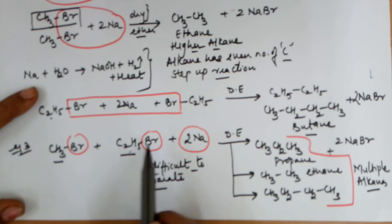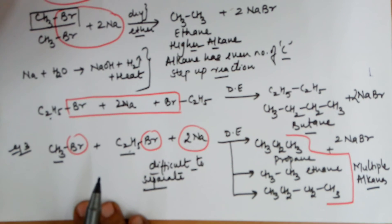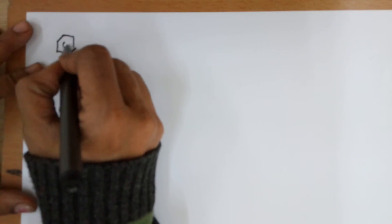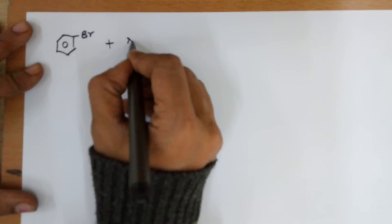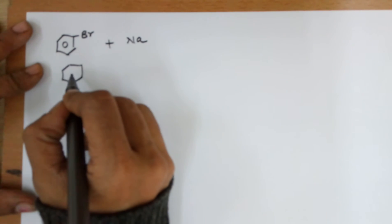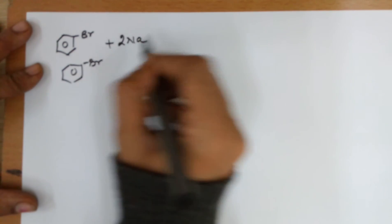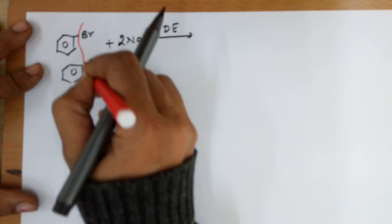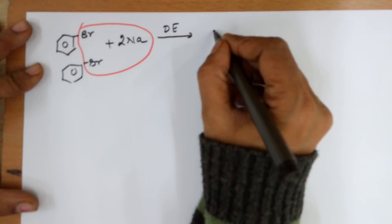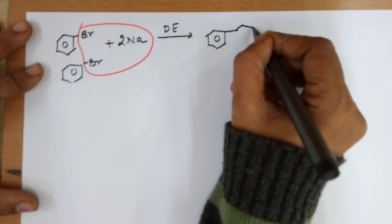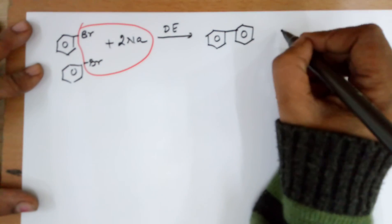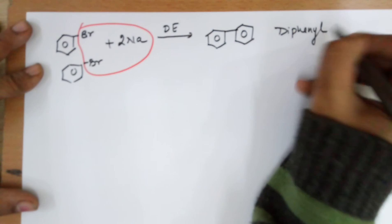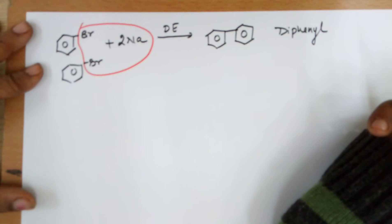Now what happens if instead of this type of reaction, I take up a reaction where one of the reactant molecules is bromobenzene and I react them with sodium. So again I would have two molecules of bromobenzene combined with two moles of sodium in the presence of dry ether. As expected, the bromines would be taken away by sodium leading to a compound like this where two benzene rings are joined together. This is called diphenyl. This can be formed as we did for the alkyl group.